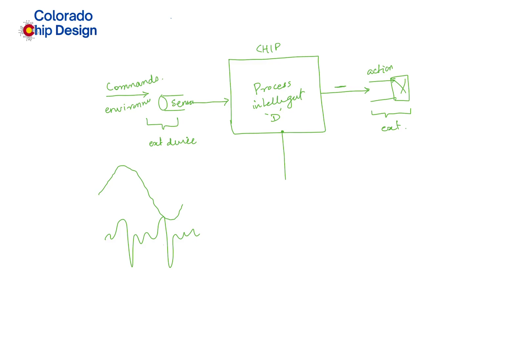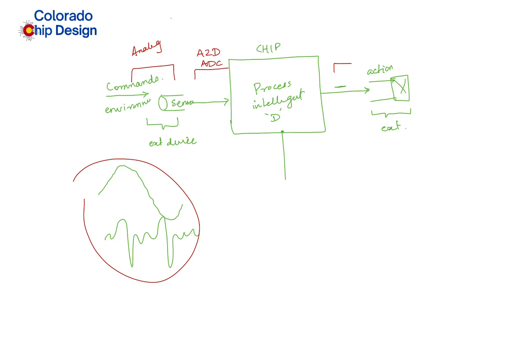So we have analog signals, and somewhere we need to convert analog to digital — this is known as ADC, analog-to-digital conversion. Similarly, at the output, we need digital-to-analog conversion. Within the chip, the massive processing, comparison, and decision-making is purely digital.